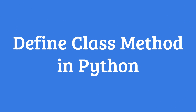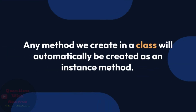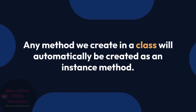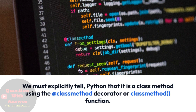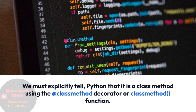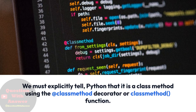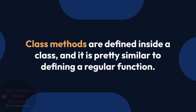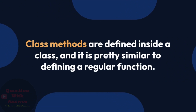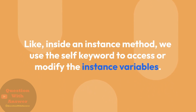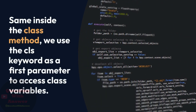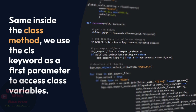The class method can be called using className.method_name, as well as by using an object of the class. Any method we create in a class will automatically be created as an instance method. We must explicitly tell Python that it is a class method using the @classmethod decorator or classmethod function. Class methods are defined inside a class, and it is pretty similar to defining a regular function. Inside an instance method, we use the self keyword to access or modify instance variables; similarly, inside the class method, we use the cls keyword as the first parameter to access class variables.